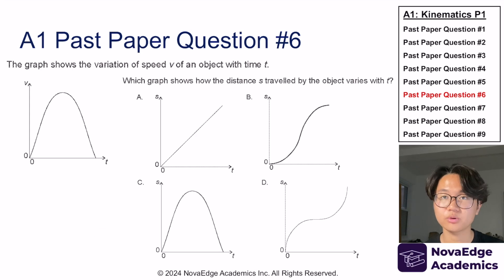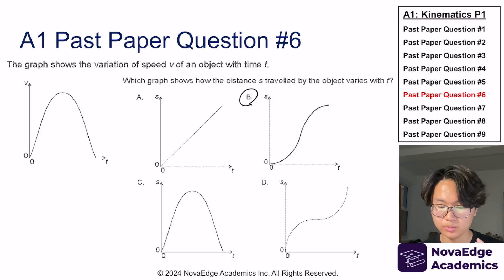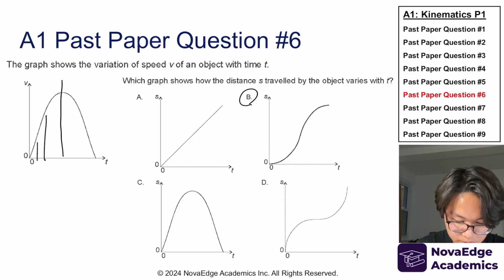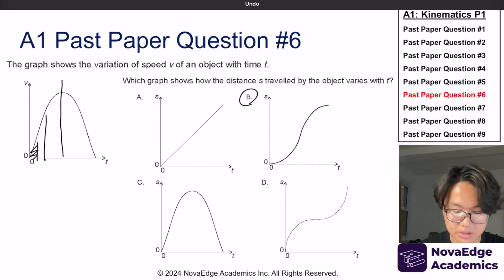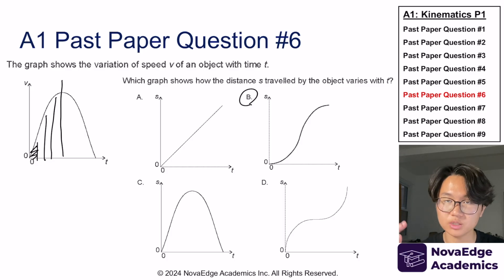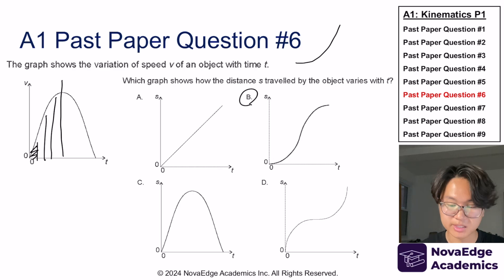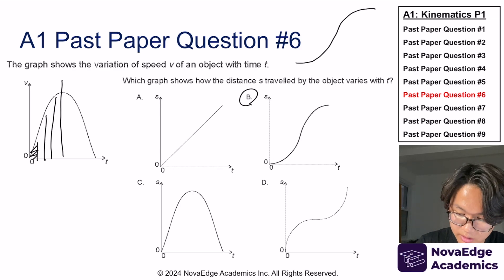Now let's try this past paper question from topic A1. If your answer was B, you are absolutely correct. The distance S traveled is the area underneath the velocity-time curve. If we split it up, the rate of addition of area is increasing incrementally — each successive time interval covers more area. So as time goes on, the distance covered per second is increasing dramatically. The next line is actually the opposite, so the displacement-time graph will look like answer B.